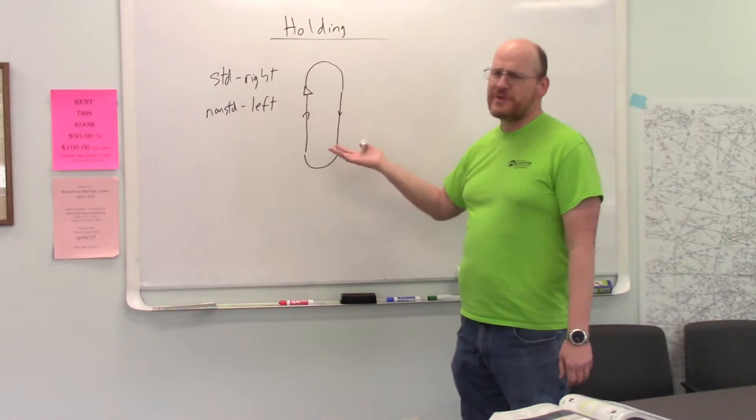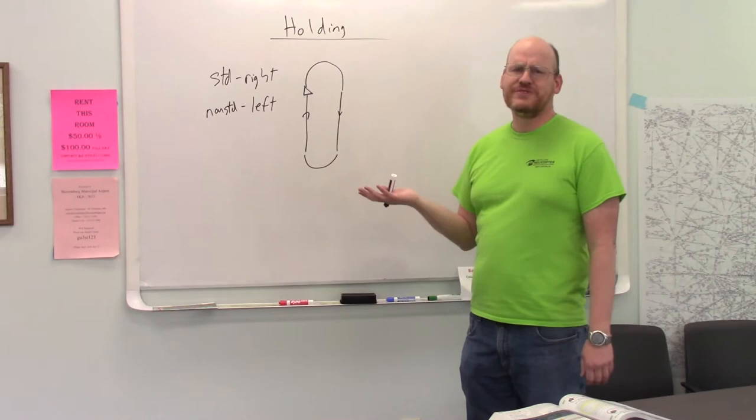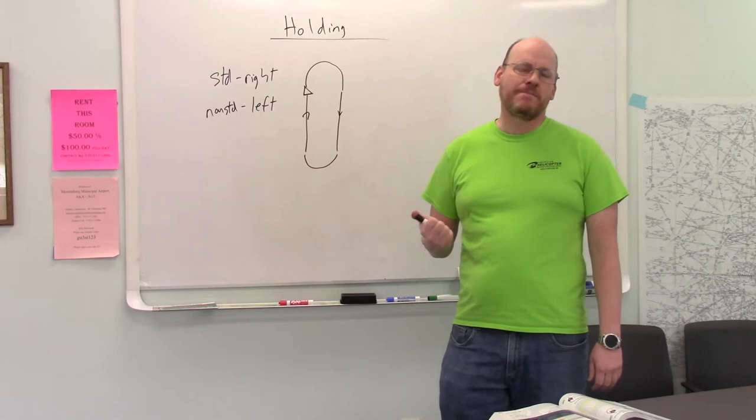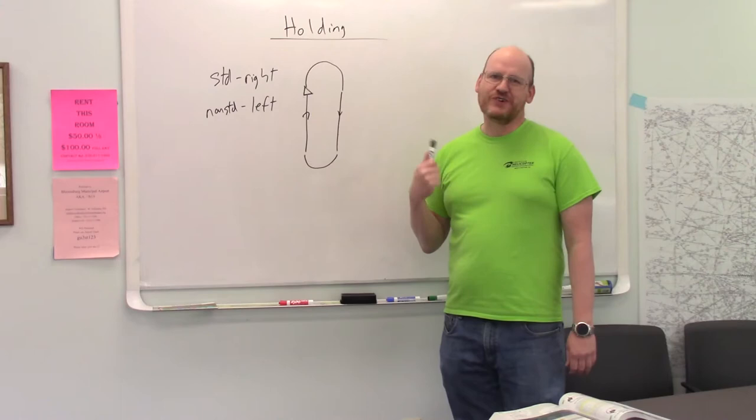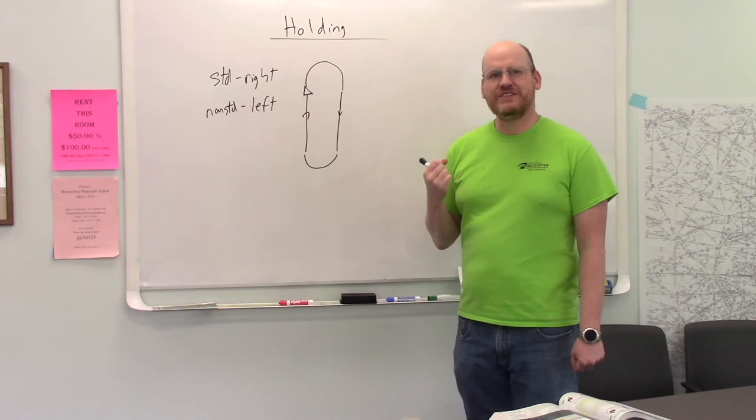So, this is what a holding pattern looks like. Now, you'll see either right turns or left turns. Why will you see these differently in different kinds of holds? Depends on things like terrain.